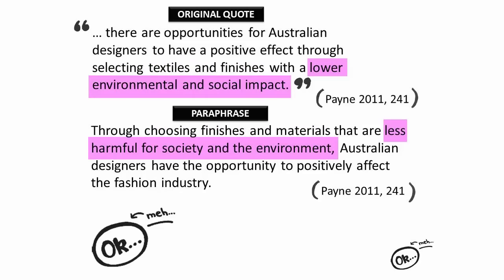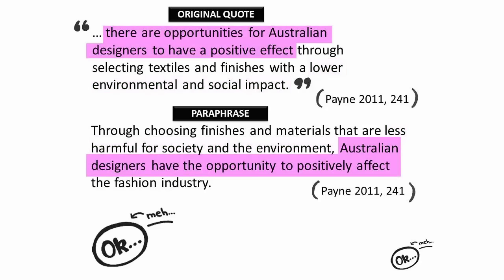I have modified 'lower environmental and social impact' to 'less harmful for society in the environment,' and again this information has moved in my paraphrase from where it was positioned in the original quote. I have modified 'there are opportunities for Australian designers to have a positive effect' to 'Australian designers have the opportunity to positively affect,' and I've put this information near the end of my paraphrase.